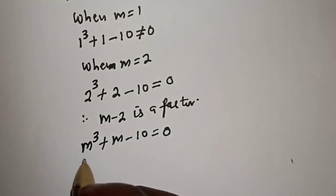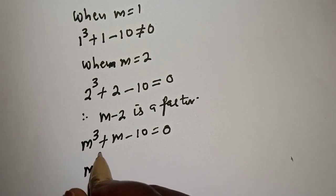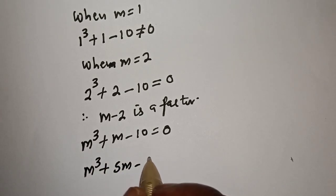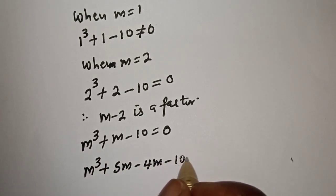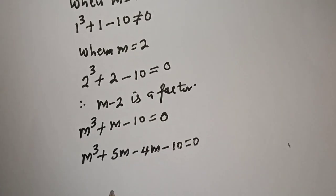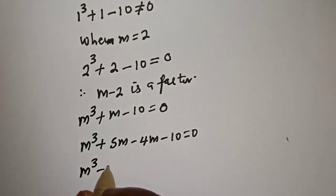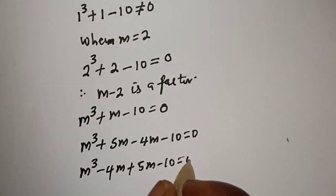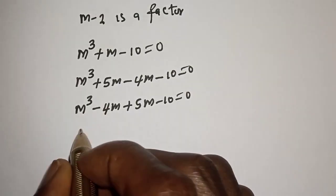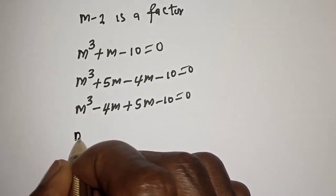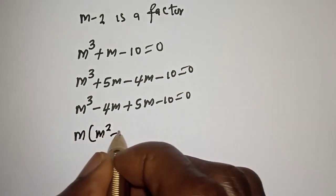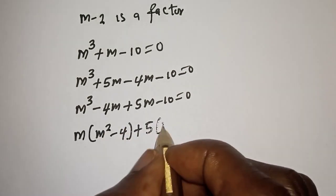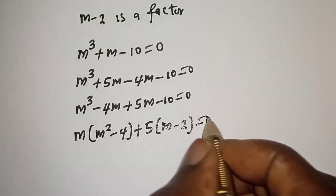So m cubed plus m minus 10 can be expressed as m cubed plus 5m minus 4m minus 10 equals 0. From here, m is common in the first two terms, giving m squared plus 5m minus 10 equals 0.